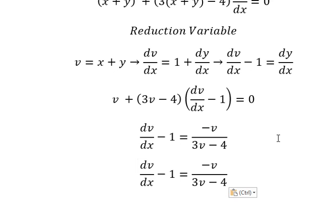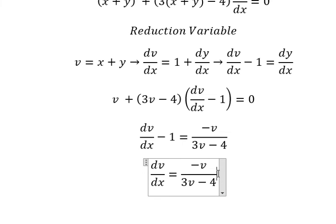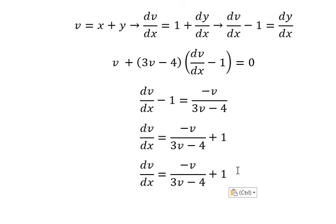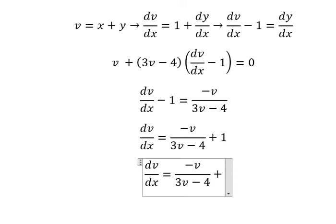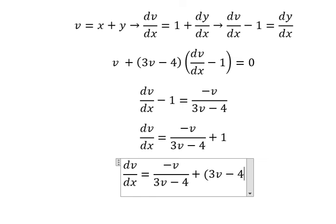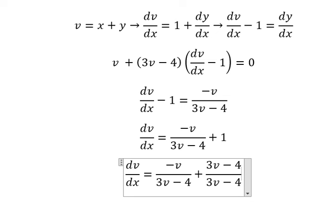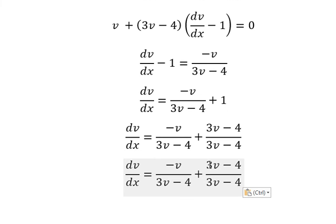Next I will put negative one to the right. That's about 3v minus 4 over 3v minus 4, because I want to do a common denominator. So negative v plus 3v gives positive 2v, and I will put negative four here.